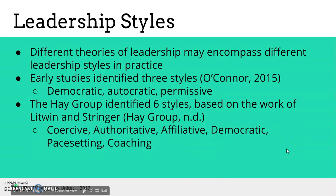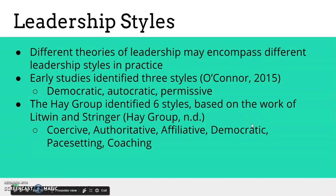What about leadership styles — what does it really mean? Well, it basically means that if you've got different theories of leadership, they might inside them encompass different leadership styles in practice. So you might apply a number of styles within a single leadership theory. Early studies talked about three styles. O'Connor reports on democratic, autocratic and permissive as being the three styles identified in early studies. But more recently, the Hay Group's six styles have been much more popular, and they're based on the work of Litwin and Stringer. These six styles are coercive, authoritative, affiliative, democratic, pace-setting, and coaching.